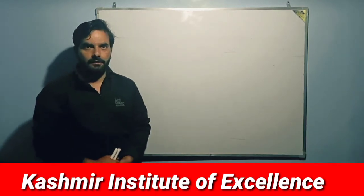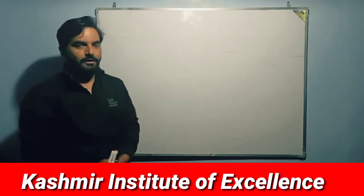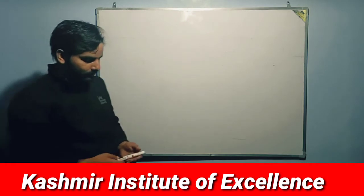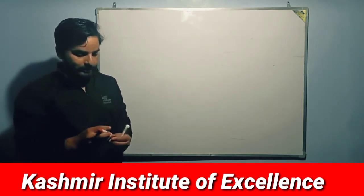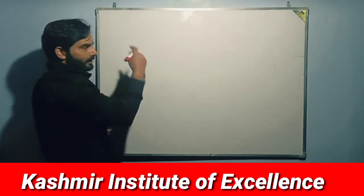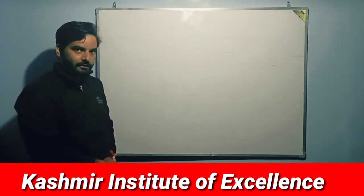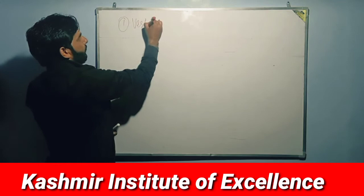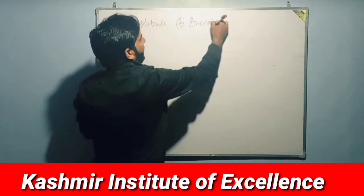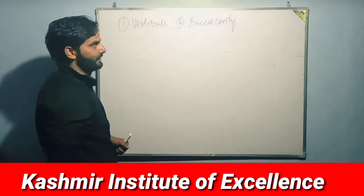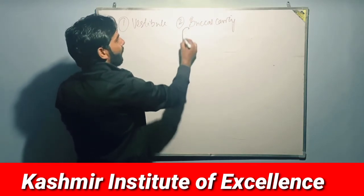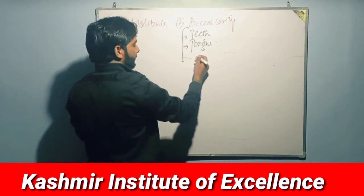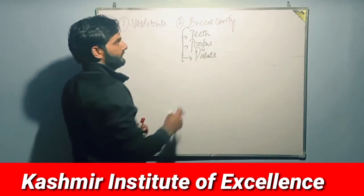Welcome again to my lecture series, the second part of digestion and absorption. If you have any confusion or comments about the lecture, you can put them in the comments. The digestive tract is called the alimentary canal — it starts from the mouth and terminates at the end. There are two parts: vestibule and buccal cavity. The buccal cavity has three components: teeth, tongue, and palate.